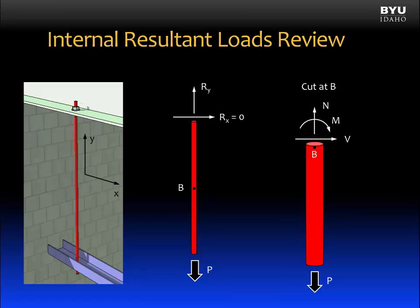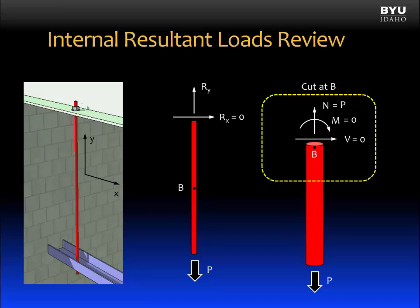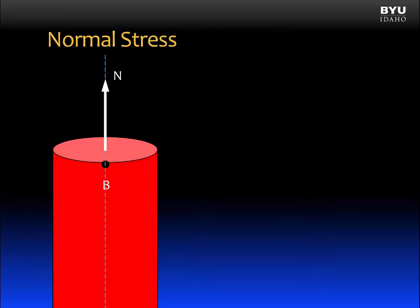Summing forces in the x direction, we know the shear is zero and the moment is zero. Summing forces in the y direction, we know that the normal force is equal to P. Let's look a little bit closer at what's going on right at point B.